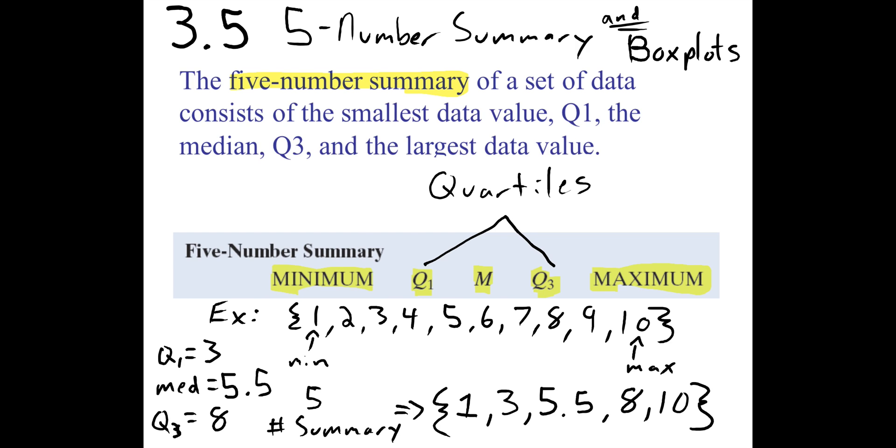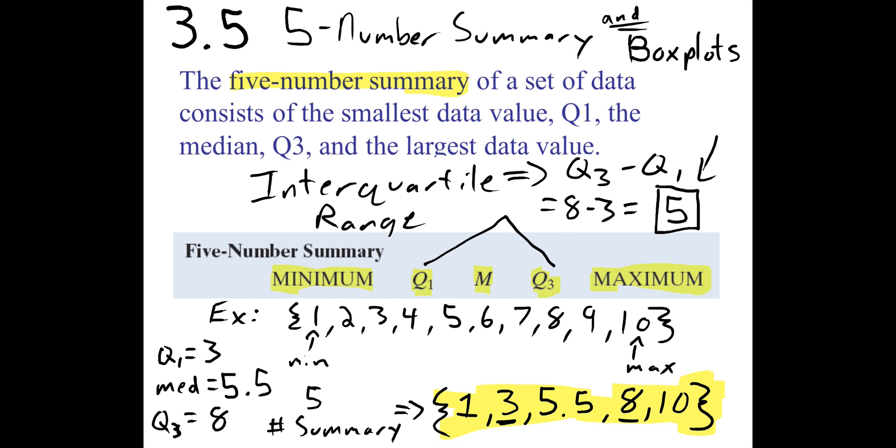We have Q3 here, and we have Q1 here. As a reminder, we can call the difference between them the interquartile range, which basically tells you the width of your middle 50% of your data, which means it's a measure of variability.